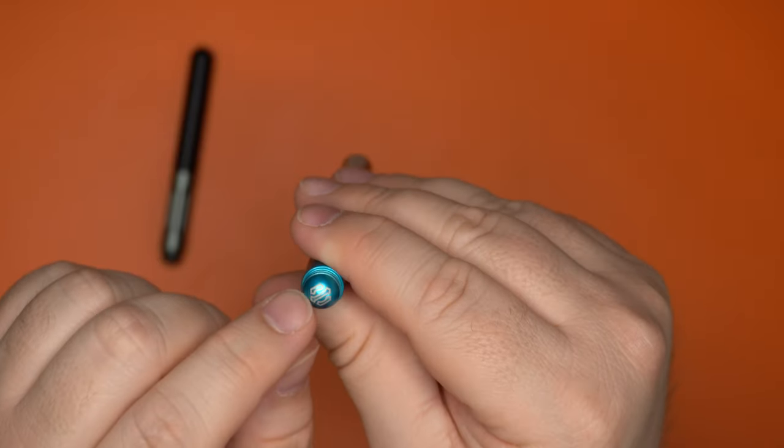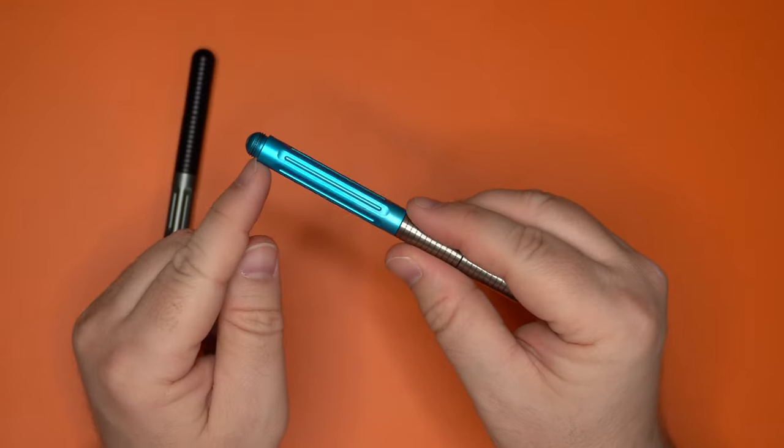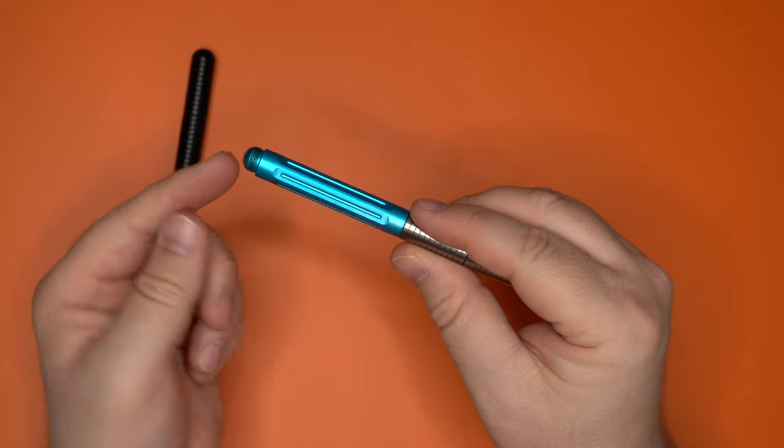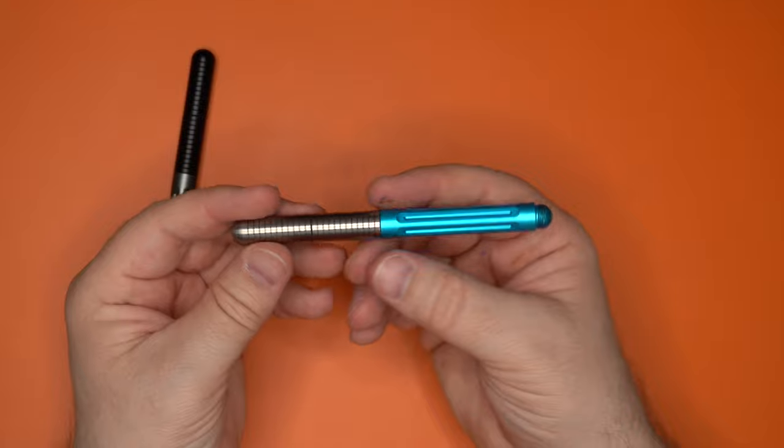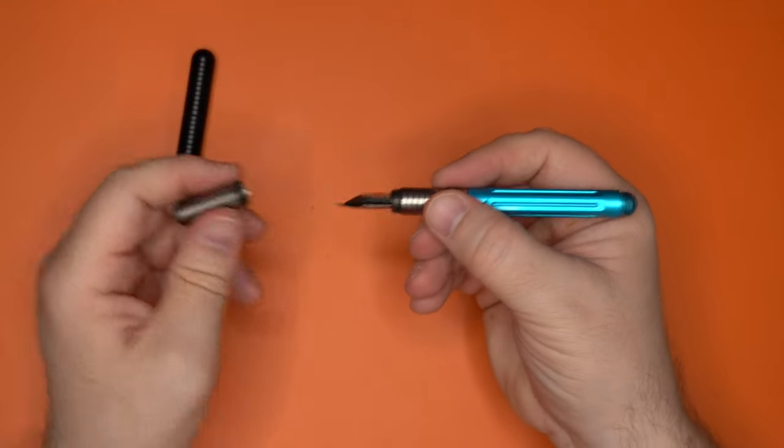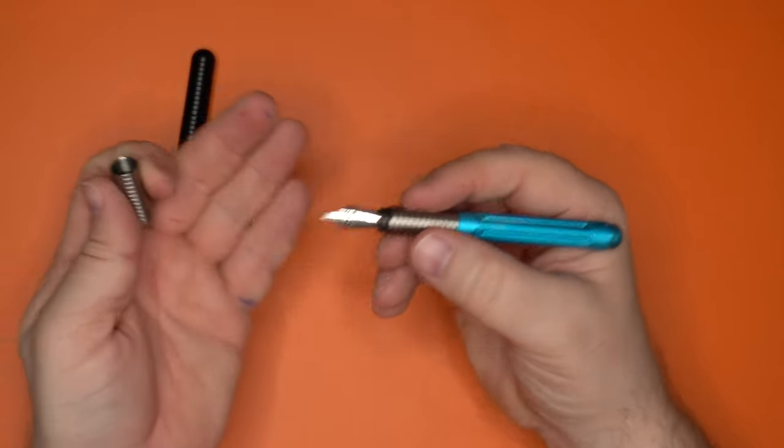You'll see down here on the bottom finial, you have an anodized Spoke logo. I think the Spoke logo is really good. Then you have some threads down here, so you can thread it. It's got a threaded posting mechanism. And then you have here titanium section and cap. This is the cap right here. You unscrew that to expose the nib.